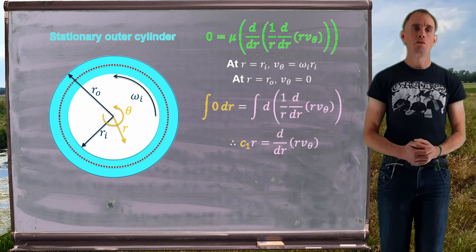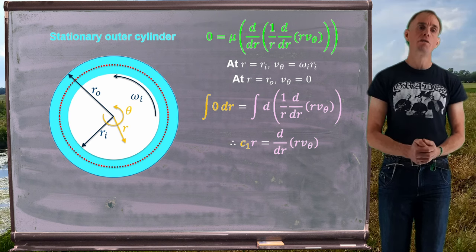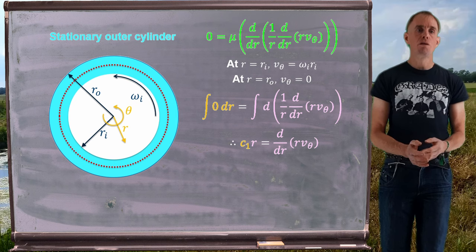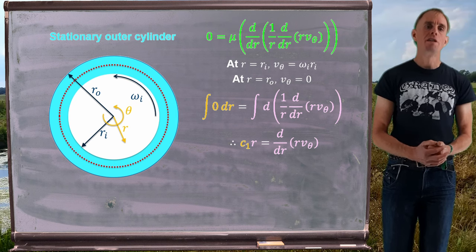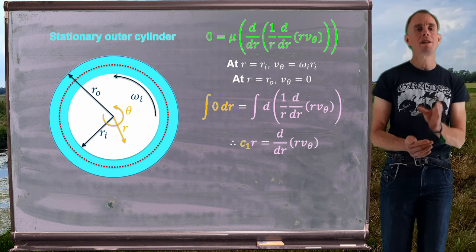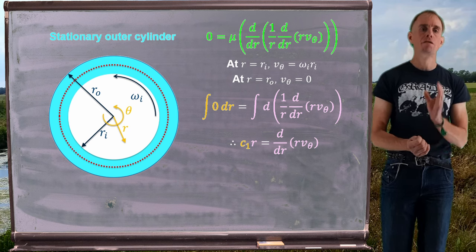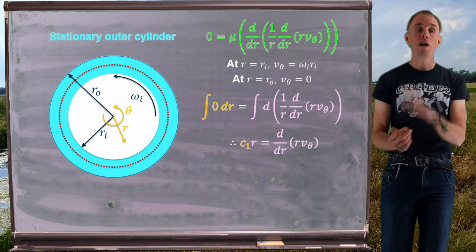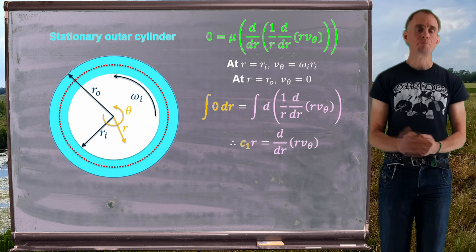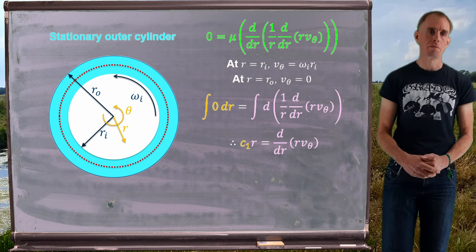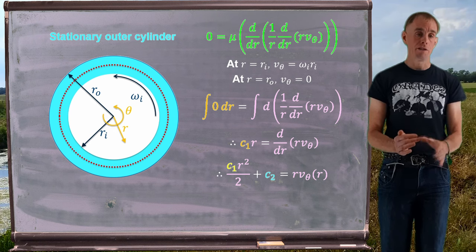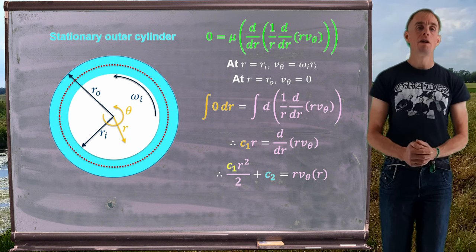Integrating the left-hand side gives us constant c_1. On the right-hand side we integrate d of (1/r) d/dr of (r v_theta), leaving a 1/r term pre-multiplying the remaining derivative. Taking that 1/r term to the left-hand side gives c_1 r equals d/dr of (r v_theta) after the first integration step. Proceeding to the second integration: the left-hand side gives c_1 r² / 2 plus integration constant c_2, and the right-hand side gives r v_theta.